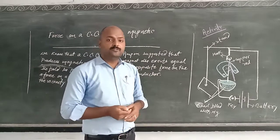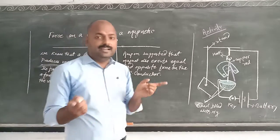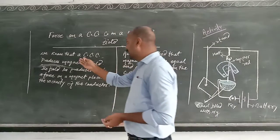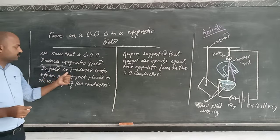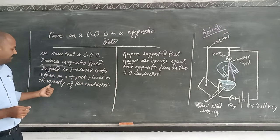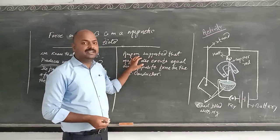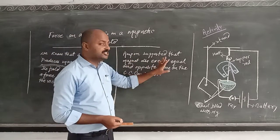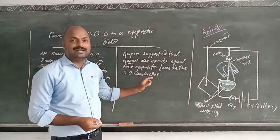Today we are going to discuss how when we place a current carrying conductor in a magnetic field, it experiences force. We know that the current carrying conductor produces a magnetic field, and the field so produced exerts a force on a magnet placed in the vicinity of the conductor. It was already suggested by Ampere in 1820 that a magnet also exerts an equal and opposite force on the current carrying conductor.